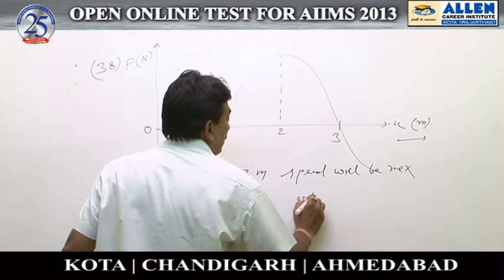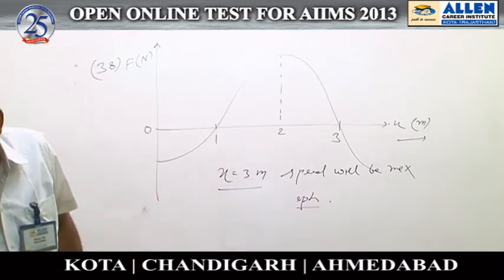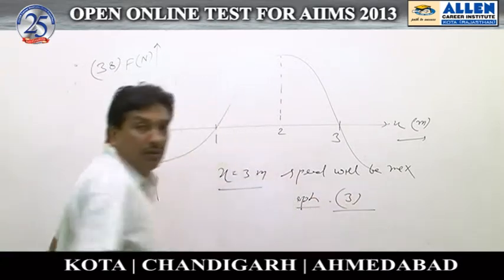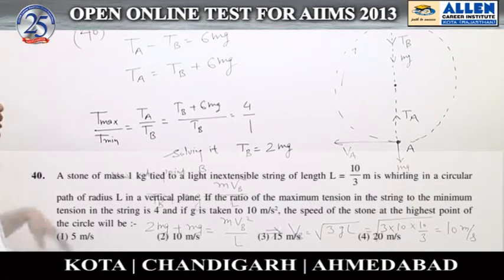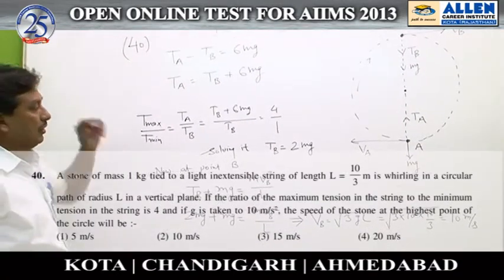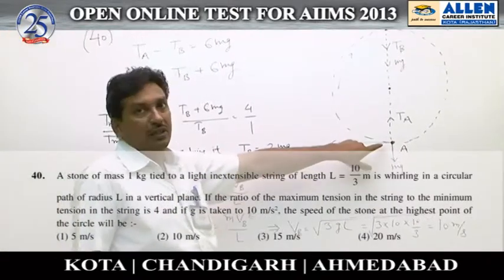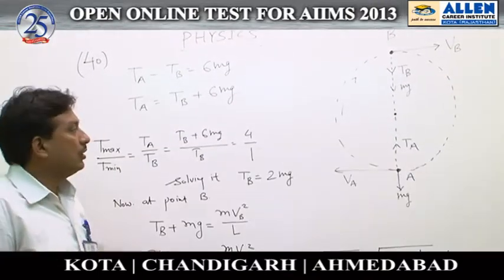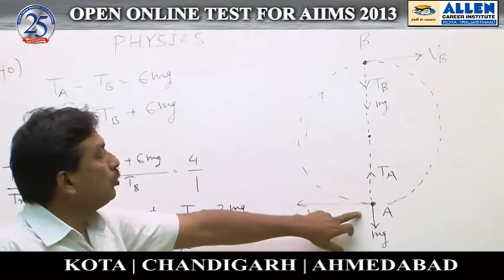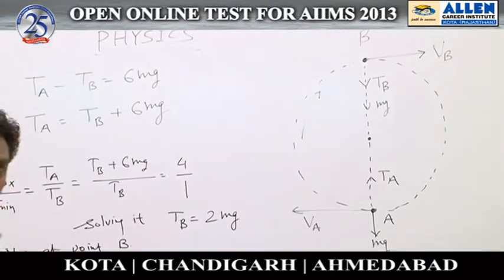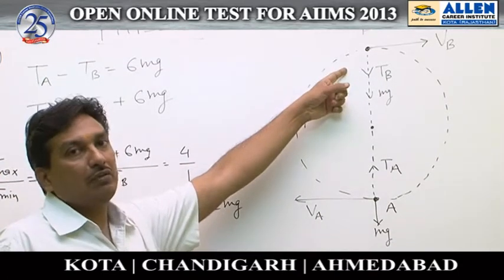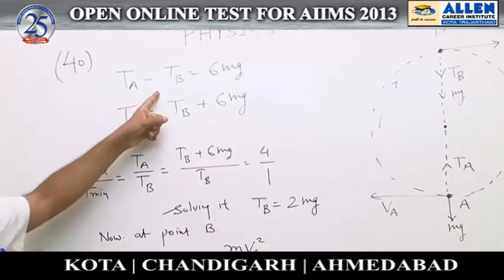Option 3 is the correct answer. In question number 40, the tension in the string at two points are different, so the particle is moving in vertical circular motion. The lower most point is A and the upper most point is B. During vertical circular motion, the difference in tension at the lower most and upper most points is equal to 6mg, so T_a minus T_b equals 6mg.